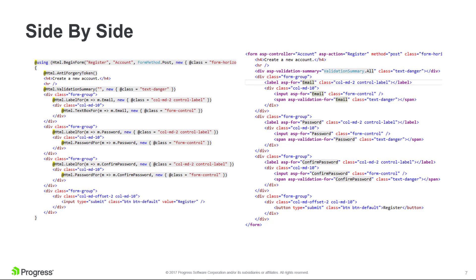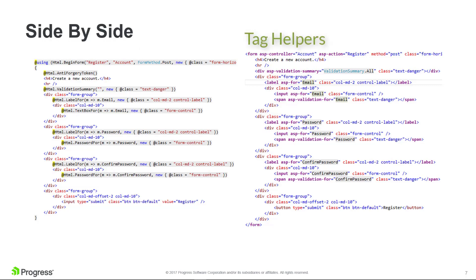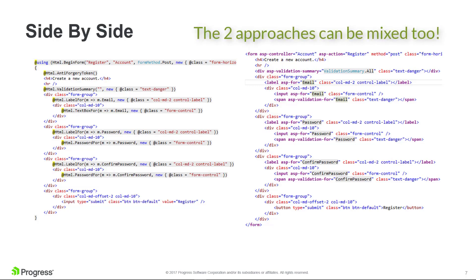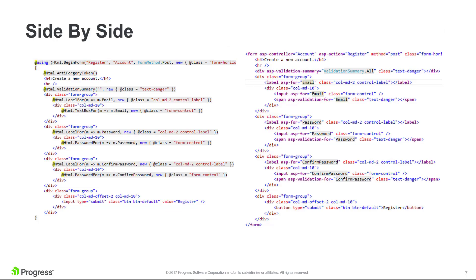A side-by-side comparison of a form implementation in a Razor file is more often than not enough to sell a developer on the concept of tag helpers. On the left, you see a form built using HTML helpers. On the right, you see that same form built using tag helpers instead. Either approach is supported in ASP.NET Core—let's be very clear about that. However, I think we can all agree that the form on the right side is much cleaner.